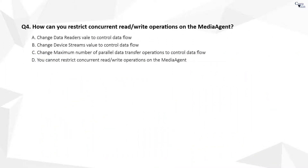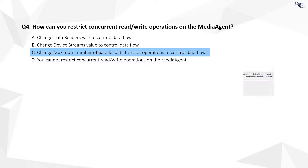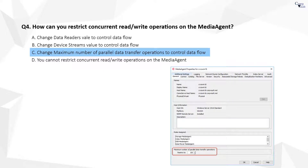Question 4. The correct answer is C. The Parallel Data Transfer Operations option allows you to set the maximum number of concurrent read-write operations to the media agent. This value controls the maximum number of data streams that can be managed by the media agent.